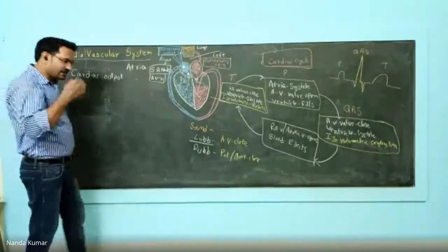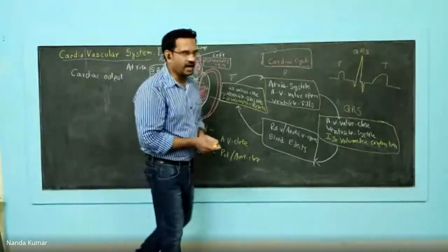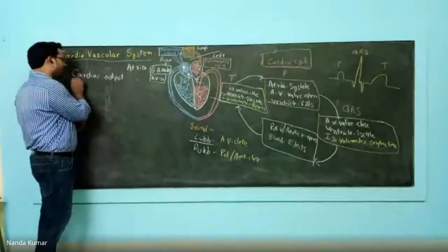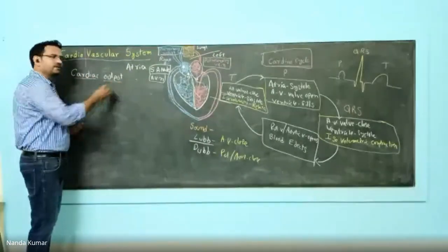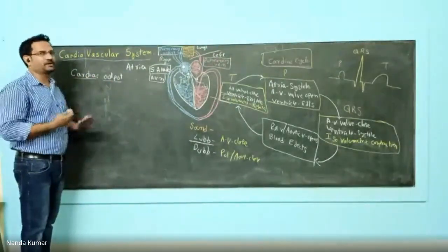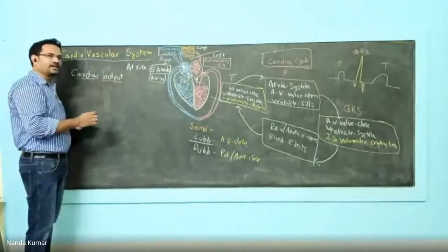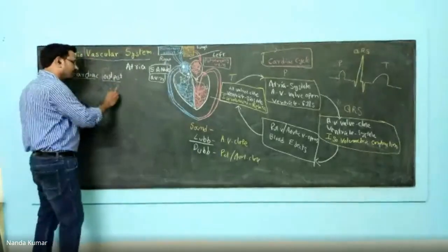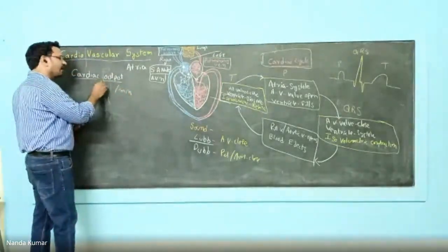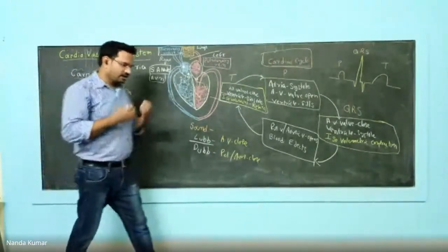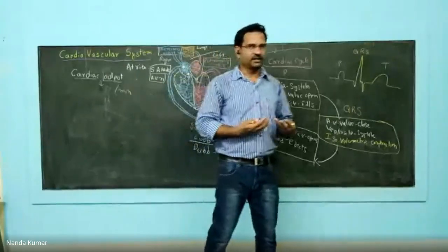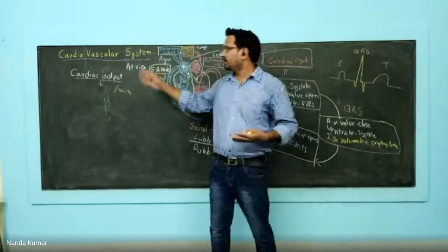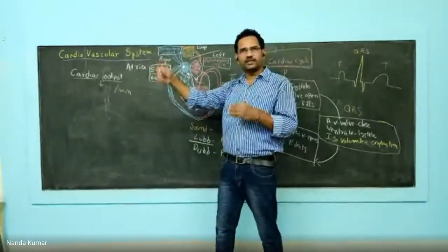Let us see cardiac output — the functioning of the heart is determined by cardiac output. What is coming out of the heart? Blood is coming out of the heart. The heart is self-explanatory: the amount of blood ejected from the heart per minute is known as cardiac output. The volume of blood per minute coming out of the heart is known as cardiac output.